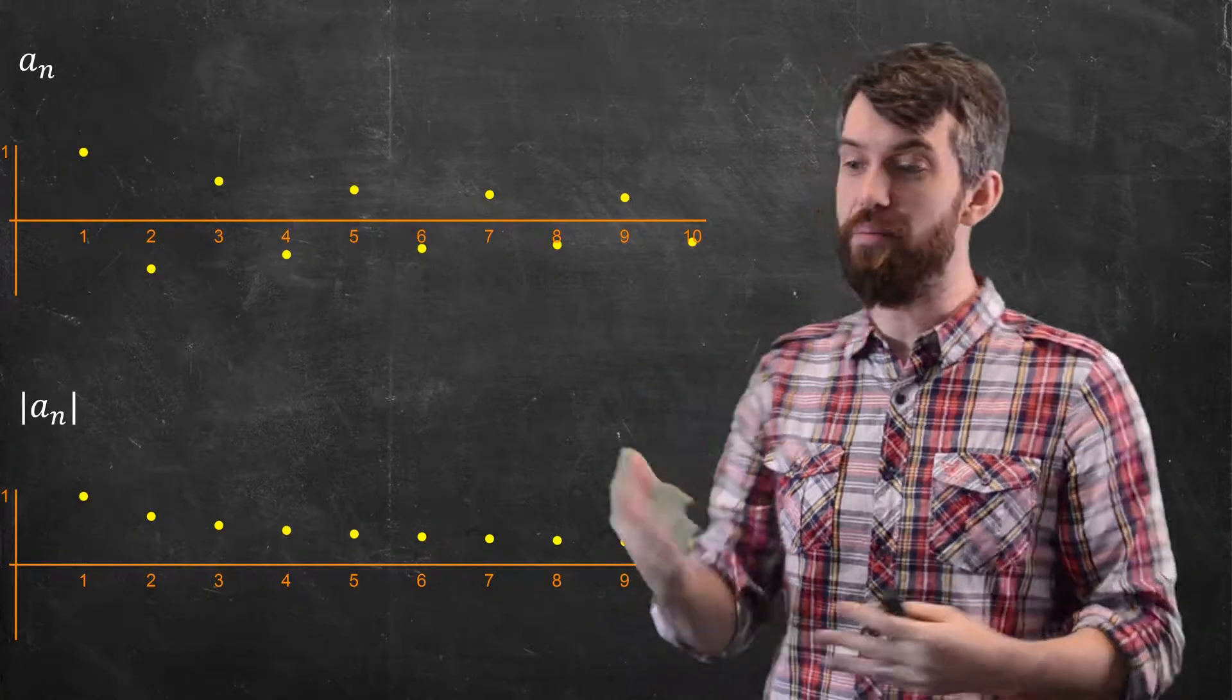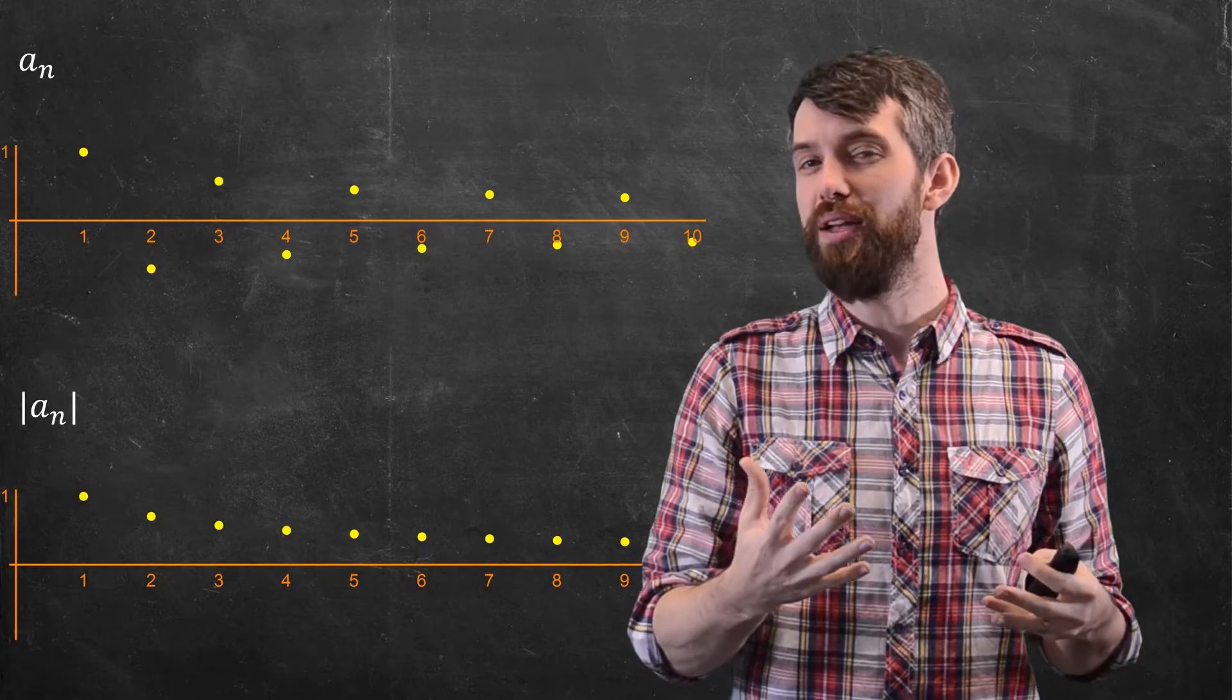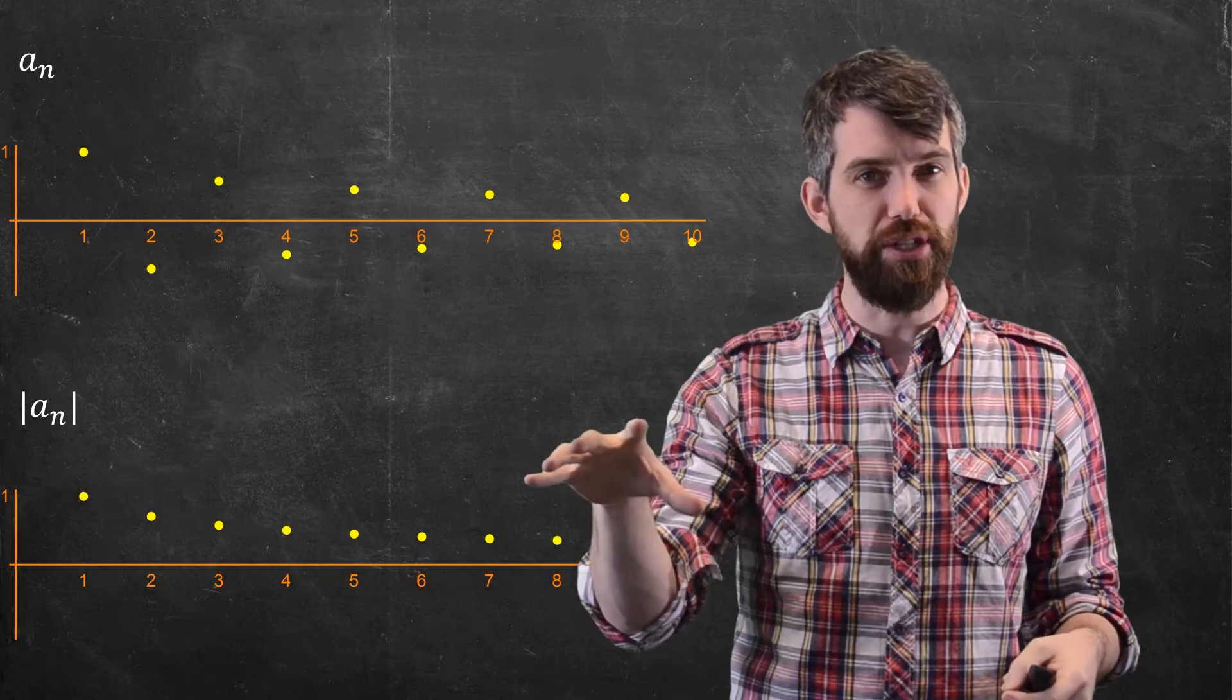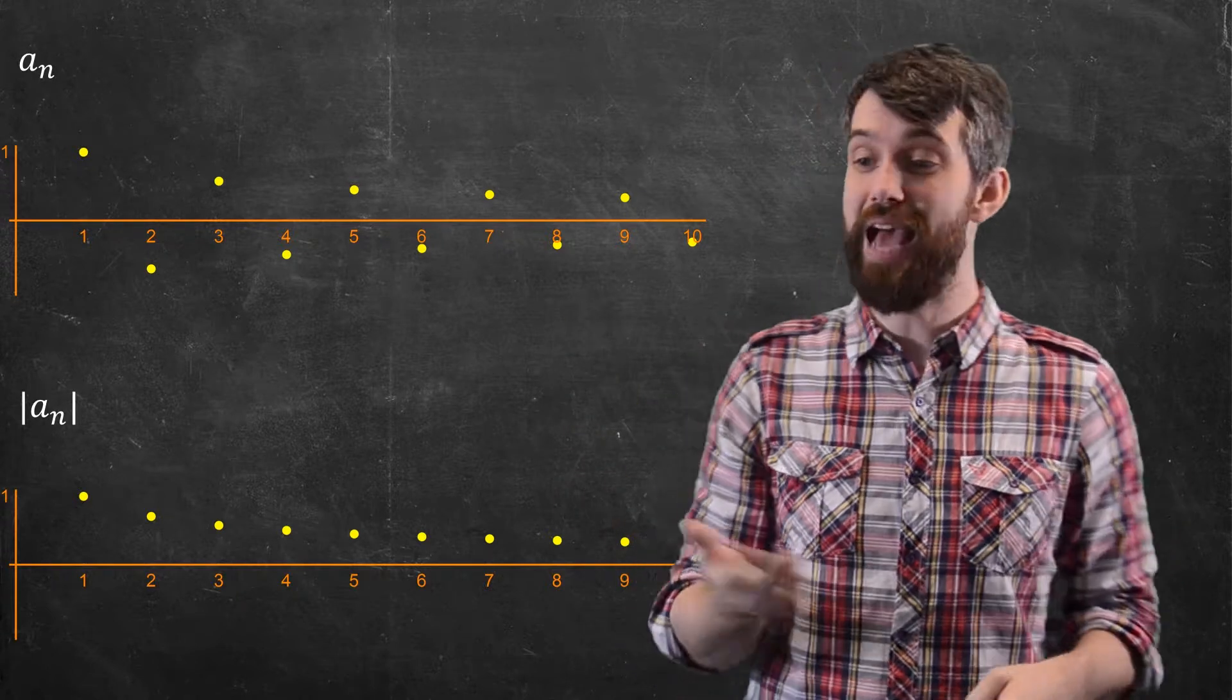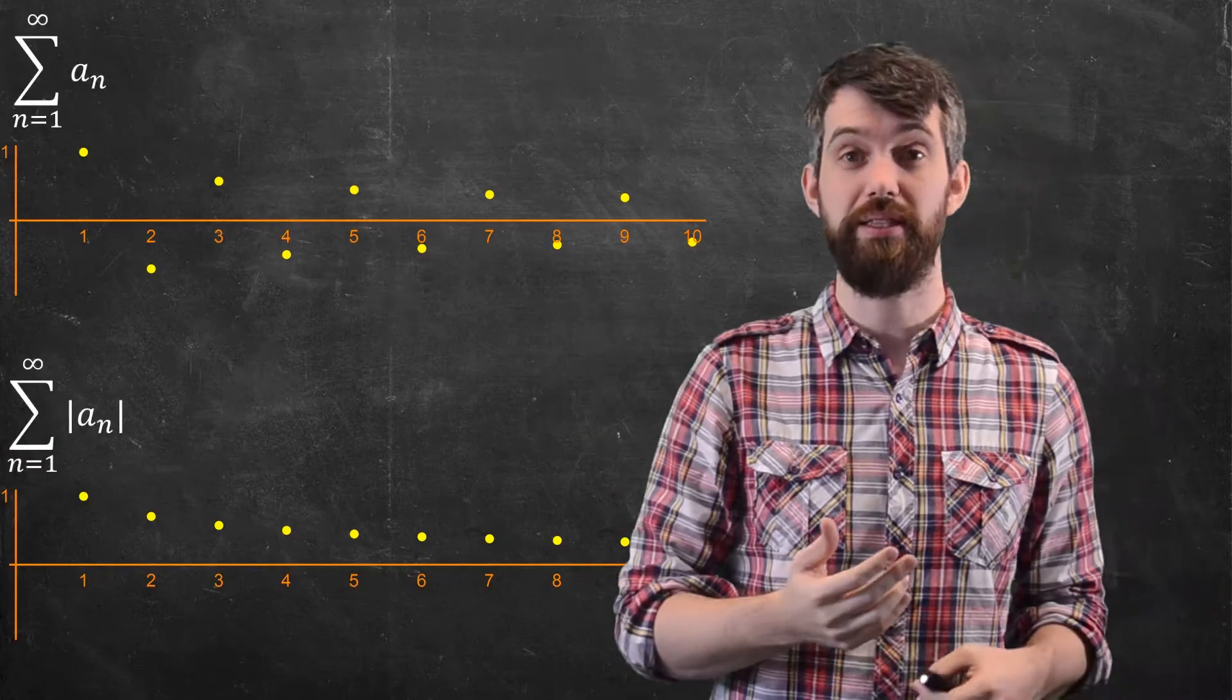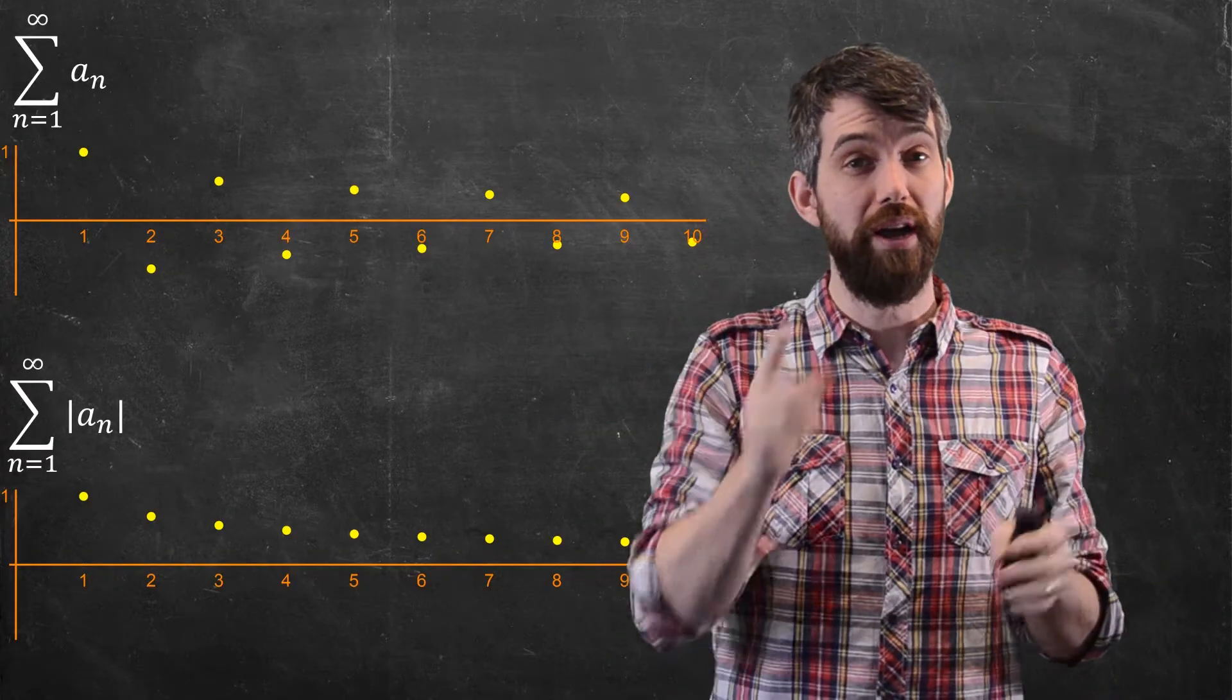Now, this is a sequence, and in both of these sequences, at least visually, it appears that the limit's going to be zero. But just because the limit of the terms goes to zero doesn't say anything about what the series does. So let's investigate that. Let's compare the series that adds up the an to the series that adds up the absolute value of the an.